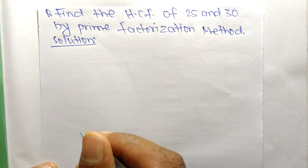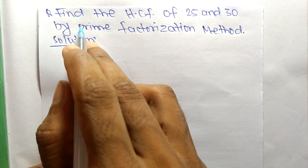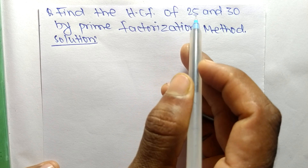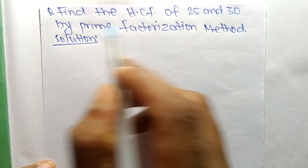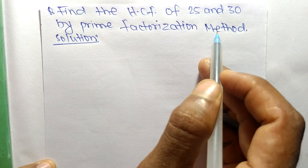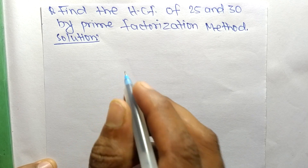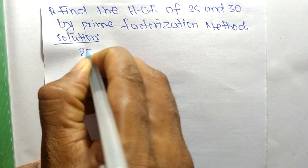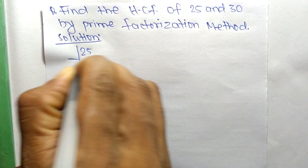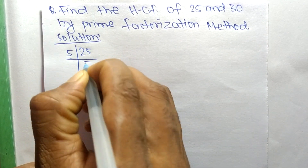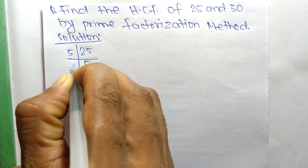Today in this video we shall learn to find the HCF of 25 and 30 by the prime factorization method. First, we find out the prime factors of 25, so it is 5 times 5, which equals 25.